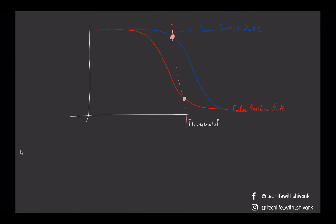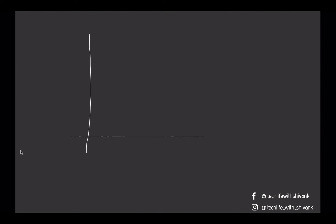This threshold can also be seen in terms of another curve known as the ROC curve. The ROC curve is a curve between True Positive Rate and False Positive Rate, with TPR on the y-axis and FPR on the x-axis.